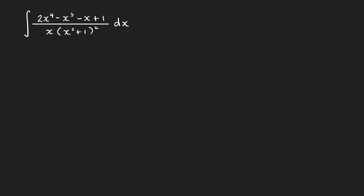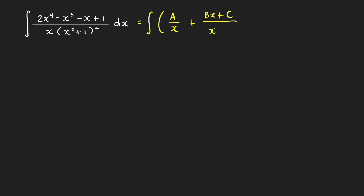We learned already how to set up the form of the partial fraction decomposition for this rational function. For the factor x in the denominator, we'll have the fraction A over x. For this repeated irreducible quadratic factor, we have two corresponding fractions — starting with power 1 and then power 2. The numerator should be linear: Bx plus C over x squared plus 1, and then plus Dx plus E all over the quantity x squared plus 1 squared.